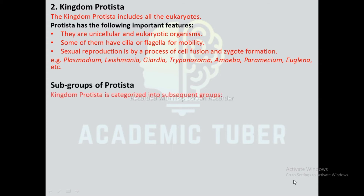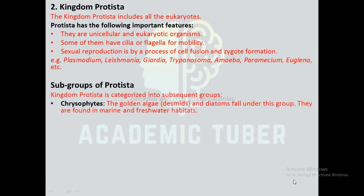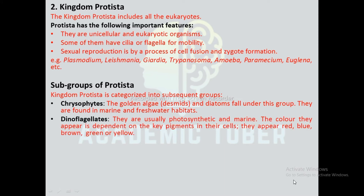Subgroups of Protista: Chrysophytes — golden algae, desmids, and diatoms fall under this group; they are found in marine and freshwater habitats. Dinoflagellates — they are usually photosynthetic and marine; the color they appear is dependent on the pigments in their cells; they appear red, blue, brown, green, or yellow.